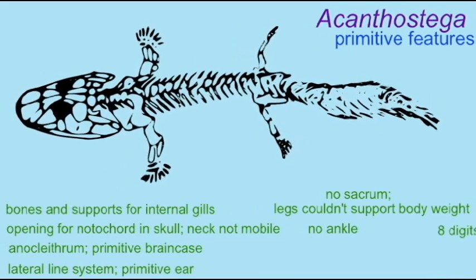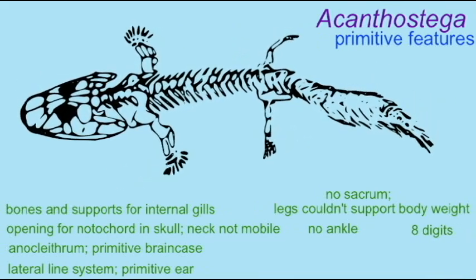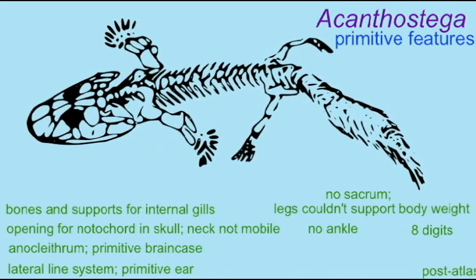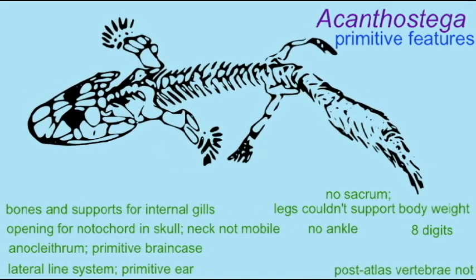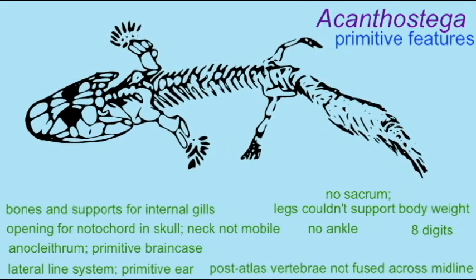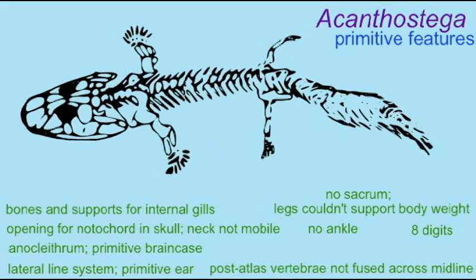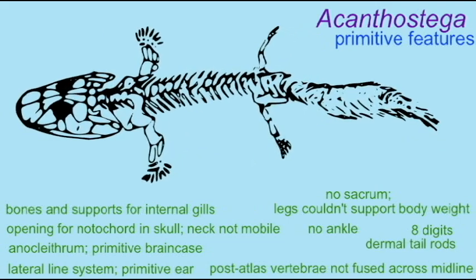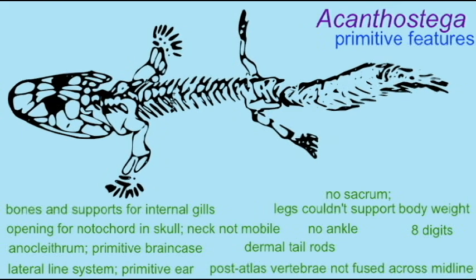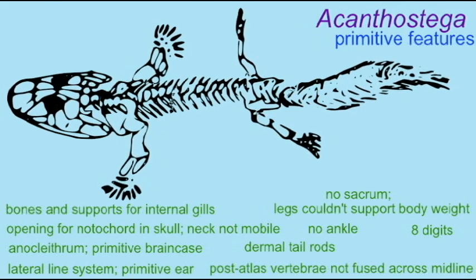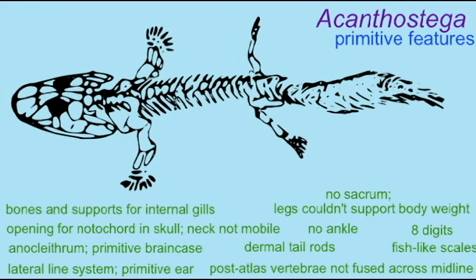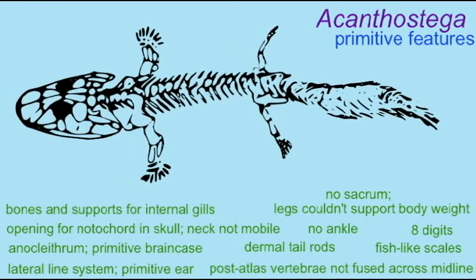The notochord was the primary axial support rod. While there were pieces of vertebrae, they were not fused to each other, nor did they fuse across the midline, except for the first one — the atlas. The post-atlas vertebrae were not fused. So although Acanthostega is a tetrapod, all of these represent primitive ancestral Sarcopterygian features, and Acanthostega is truly a transitional fossil.